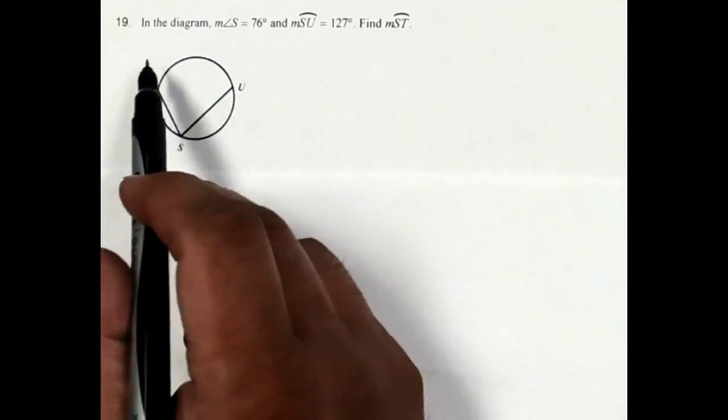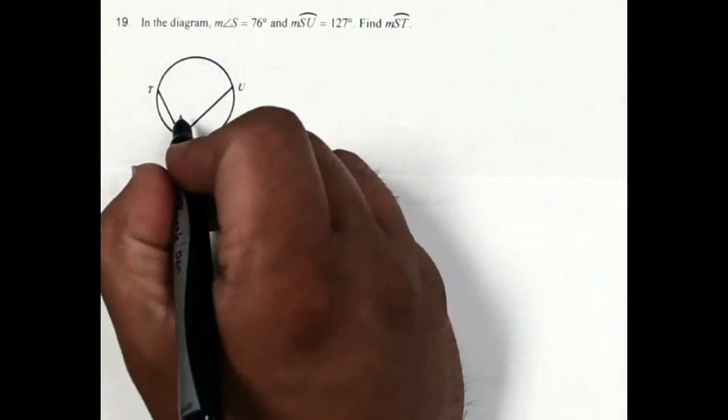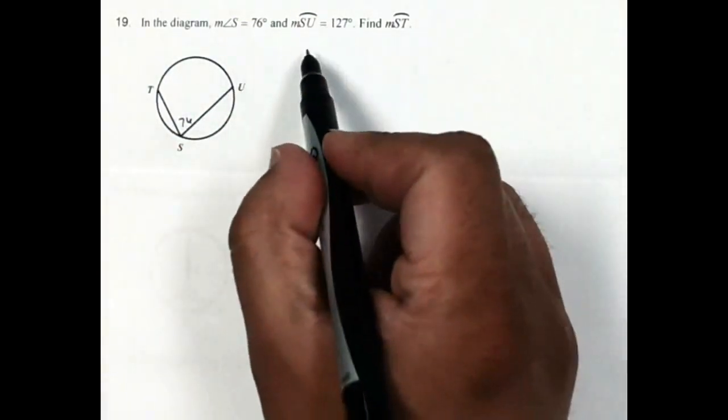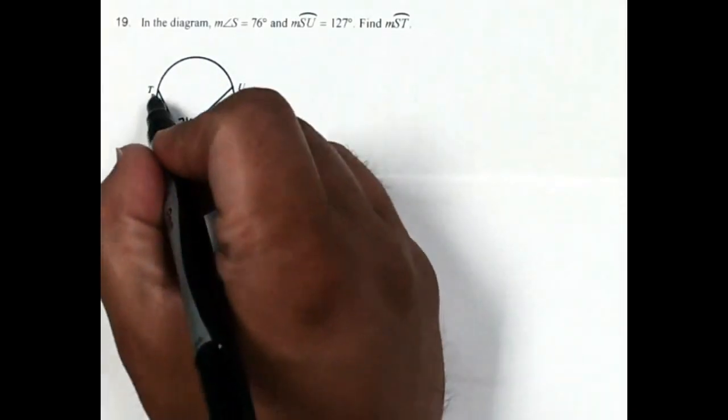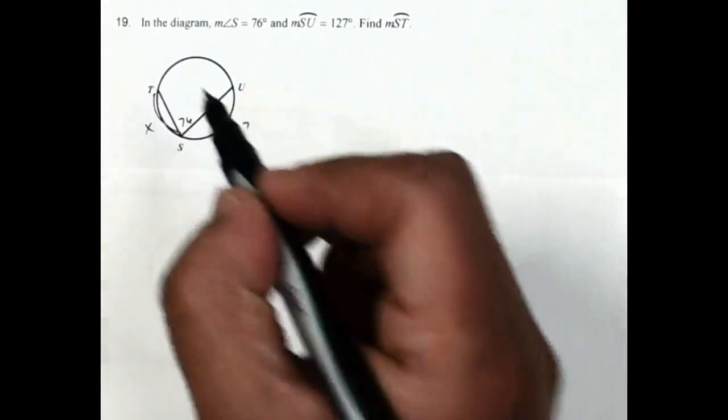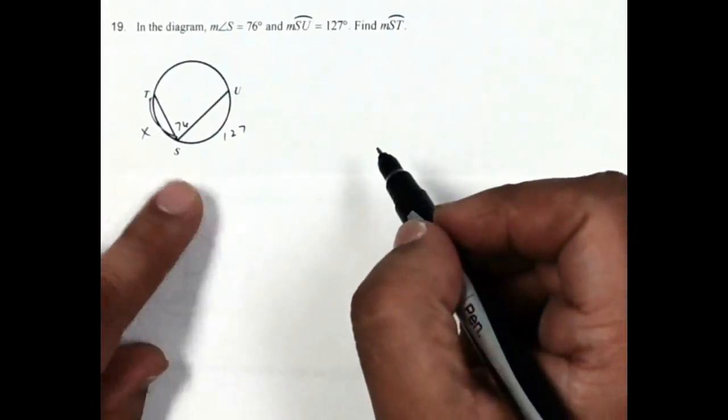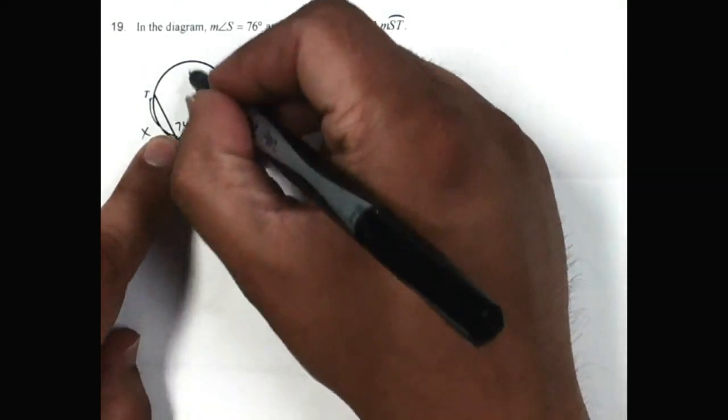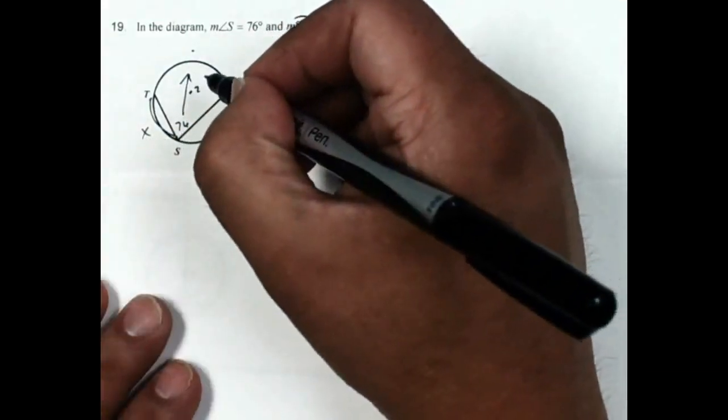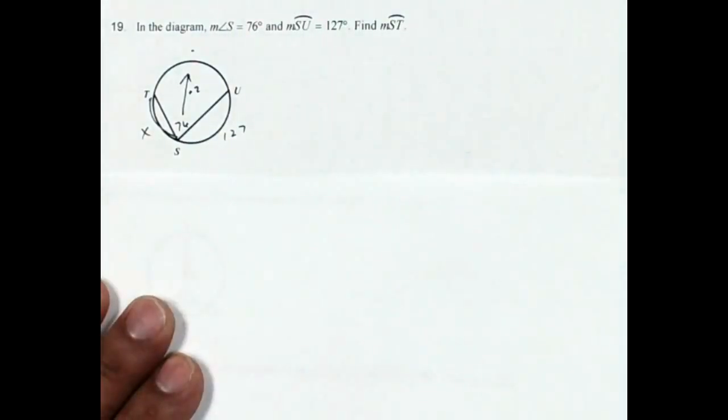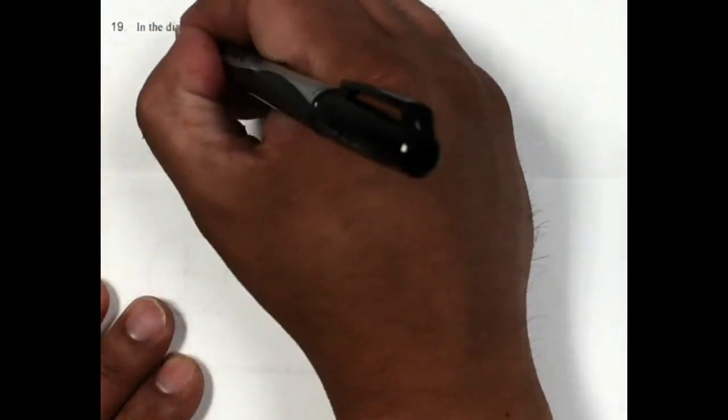All right, now number 19 in the diagram, measure of angle S is 76. The measure of arc SU is 127, and we want to find the measure of arc ST. So there's my x, that's what's missing. Since the angle is half the arc, and I'm going from the angle to the arc, I want to multiply by 2. 76 times 2 is going to be 152.